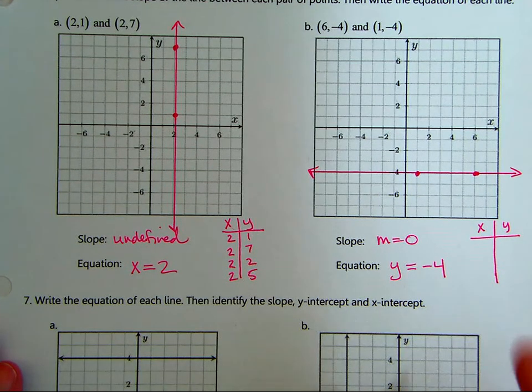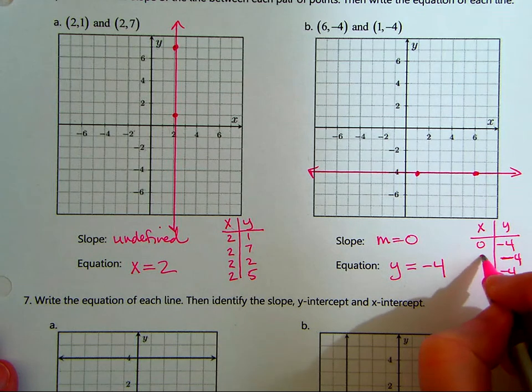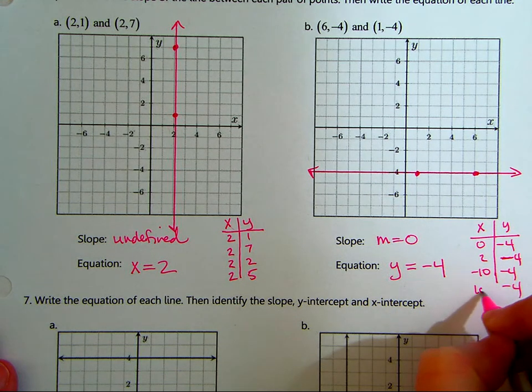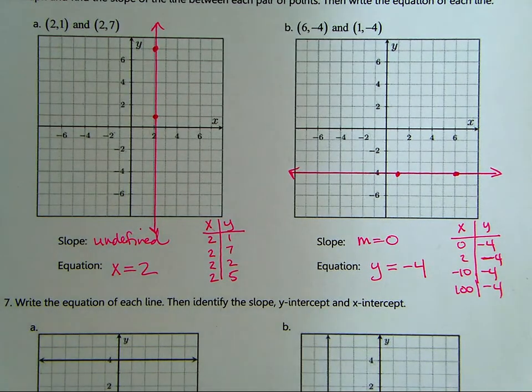The y value is always negative 4. Oops. Not too negative. It doesn't matter what you put in for x. I could put in 0, 2, negative 10, 100. It doesn't matter what the x value is. All it's saying is the y value is always equal to negative 4. So this one is parallel to the x.